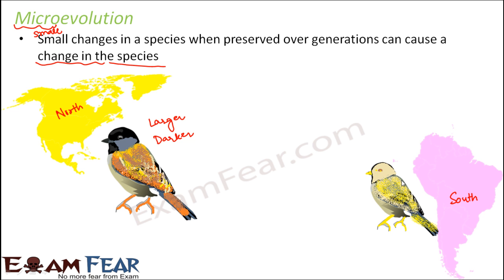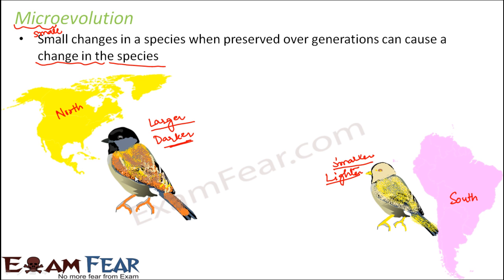Why do we see these changes? The larger size of the sparrow helps it cope better with cold weather — the climate in North America is colder, so they can survive better at lower temperatures. As a result, they are larger and darker in color. It is just the opposite for sparrows in South America, which is why they are smaller and lighter in color. This is an example of micro evolution: both sparrows come from the same species and still belong to it, but changes in size and color have taken place.